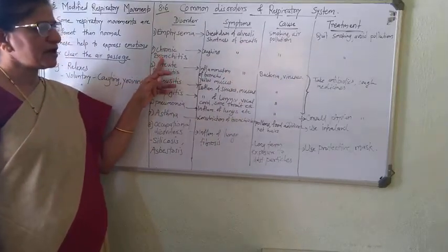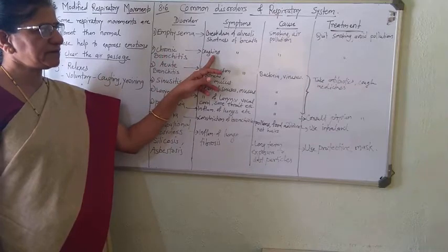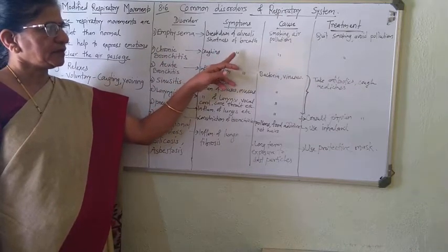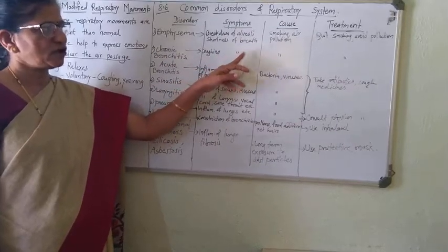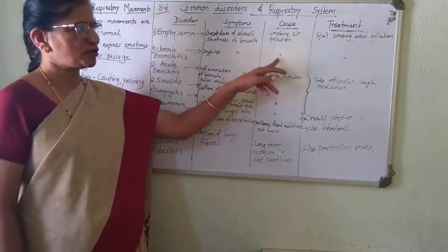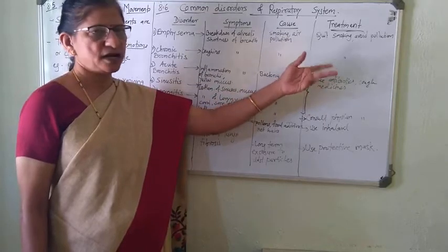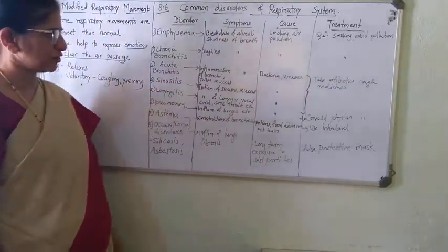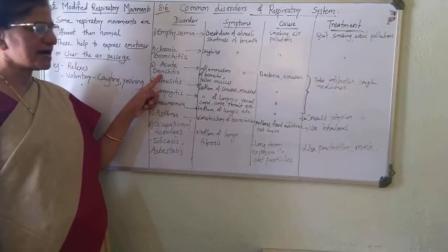The next disorder is chronic bronchitis. The symptoms are coughing and shortness of breath. The causes are the same — smoking and air pollution. The treatment is also the same: quit smoking and avoid air pollution.